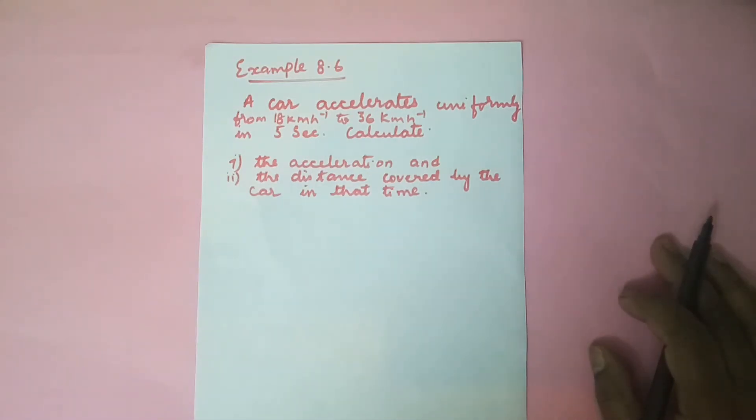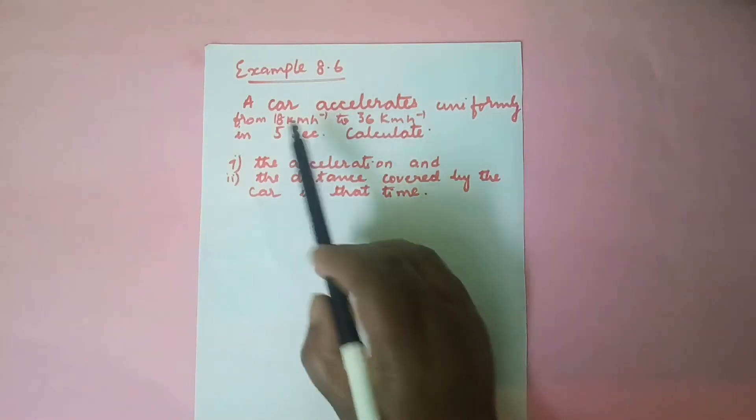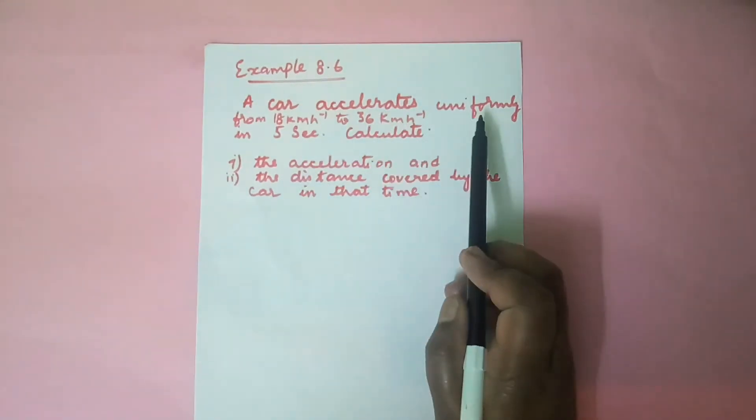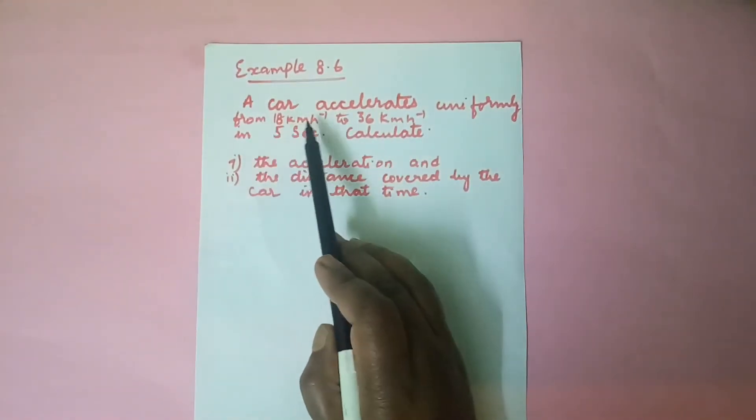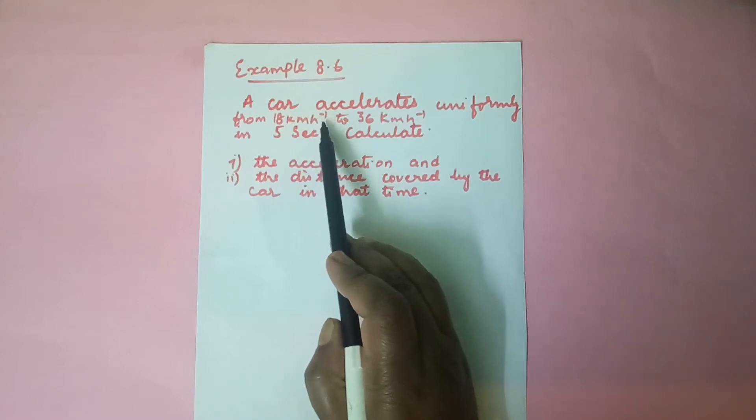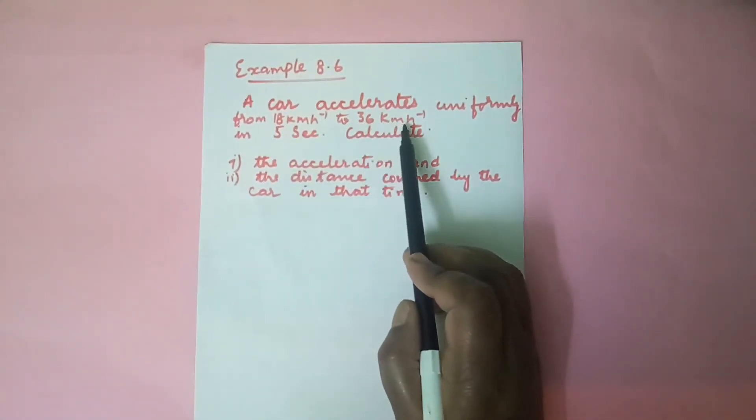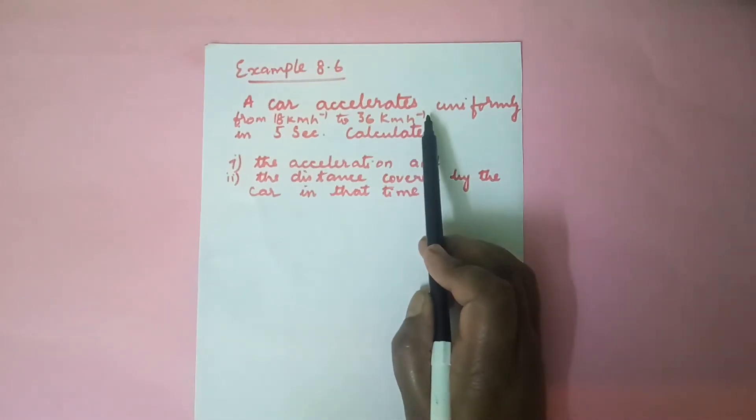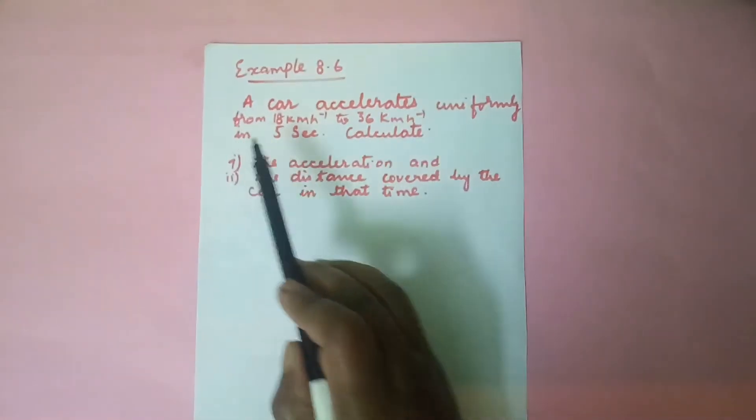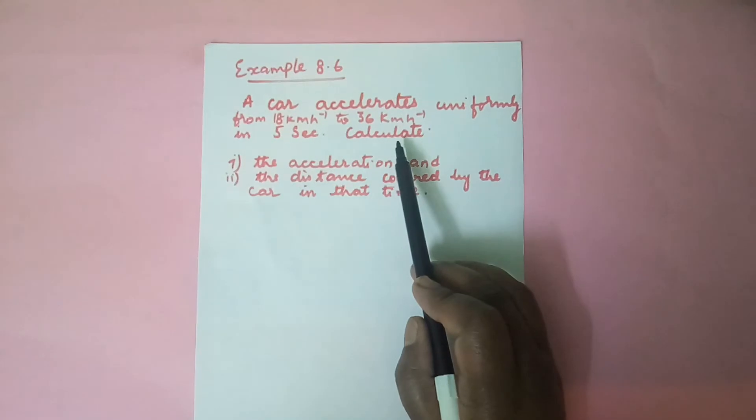Today we shall solve example 8.6. Let us go to the sum, children. A car accelerates uniformly from 18 km per hour to 36 km per hour in 5 seconds. Calculate: